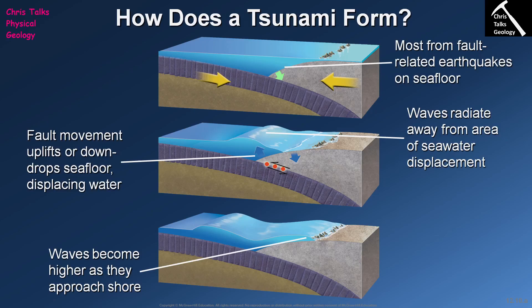Tsunami generation is actually a relatively straightforward process. The vast majority of the time it occurs at convergent plate boundaries where we have subduction taking place. The most important thing to remember is that when the crust rebounds and displaces the water above it, the displaced water will split in two and go in opposite directions — one half into open water and one half back towards the continent. We're going to look at a particular earthquake from Chile in 1960 and see the effects of this displaced water splitting and going in two separate directions.